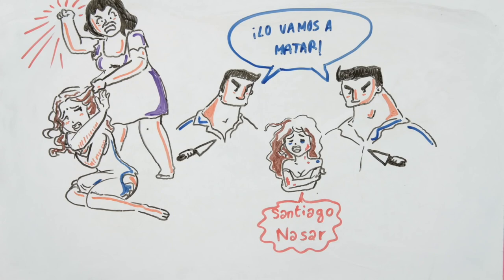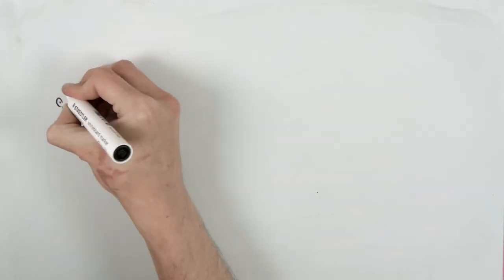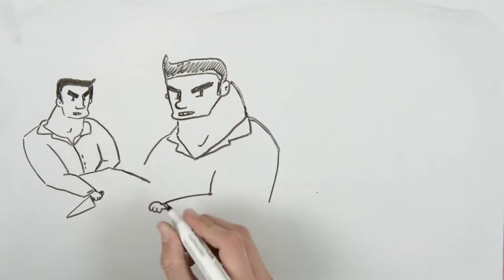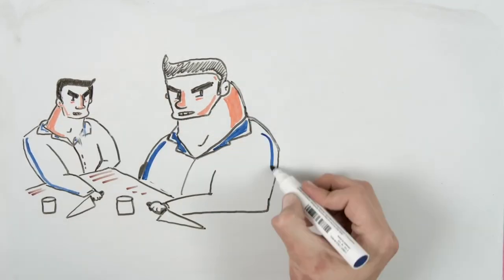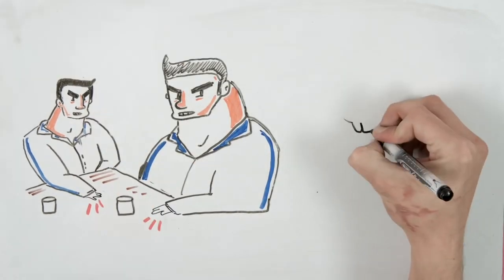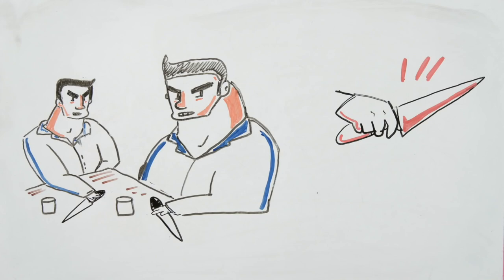The brothers took the knives and went to the market to sharpen them. They decided to wait for him at Clotilde Armenta's store. The news reached the colonel, who went there, took the knives from the brothers, and left without questioning them. The brothers went in search of other knives and returned to the store.